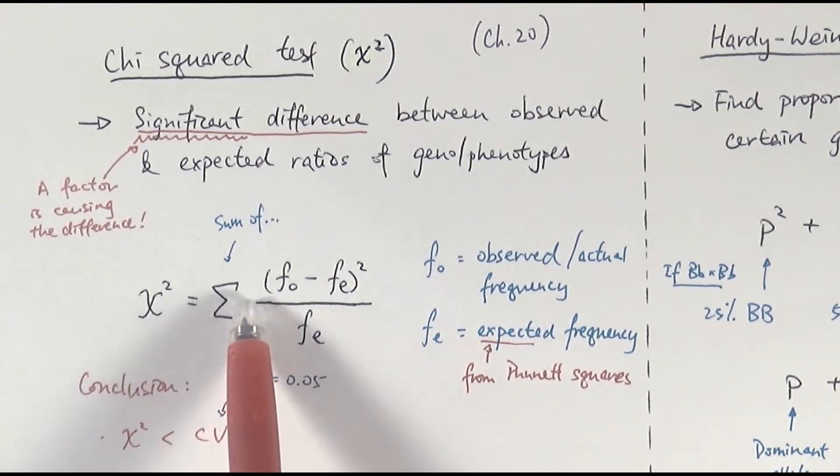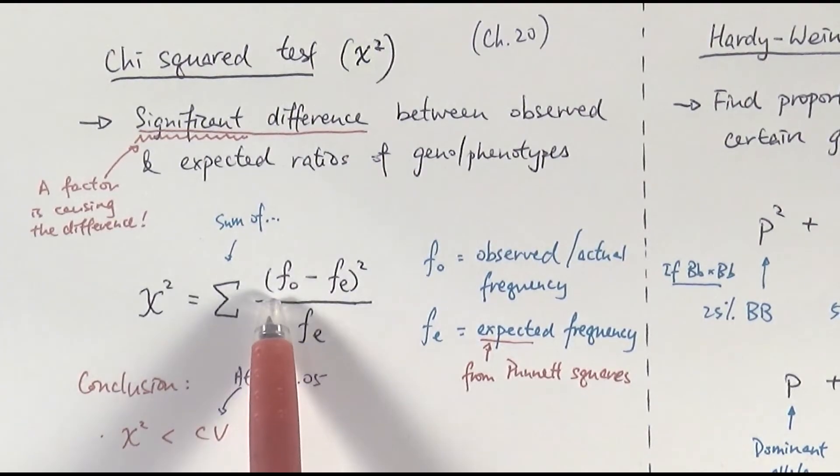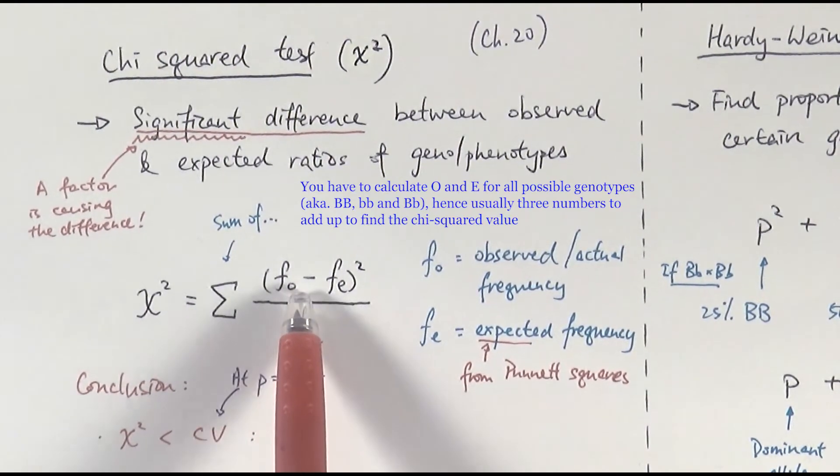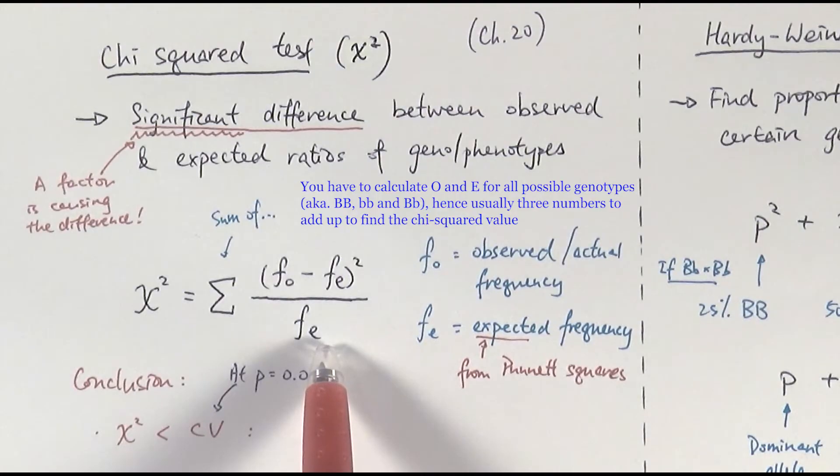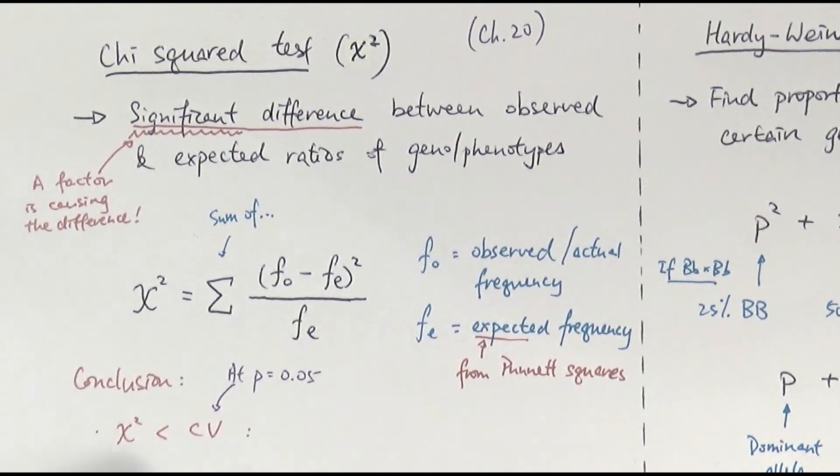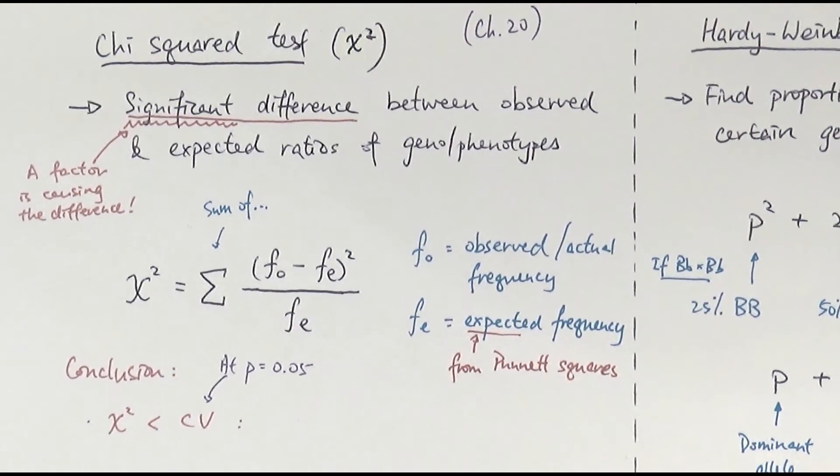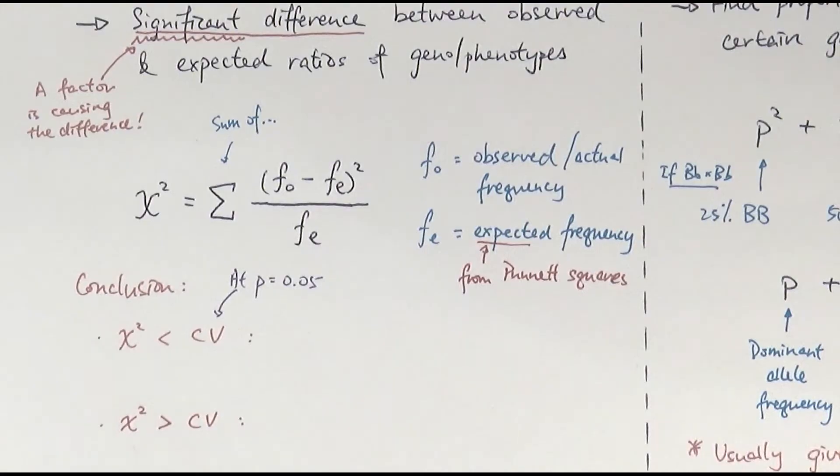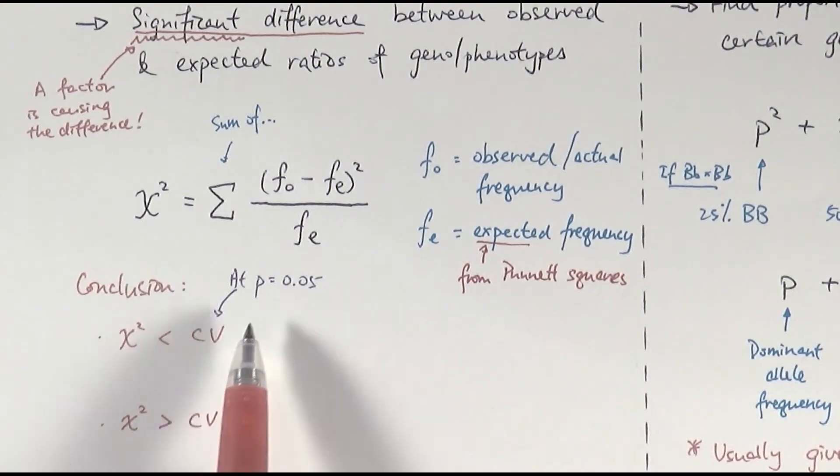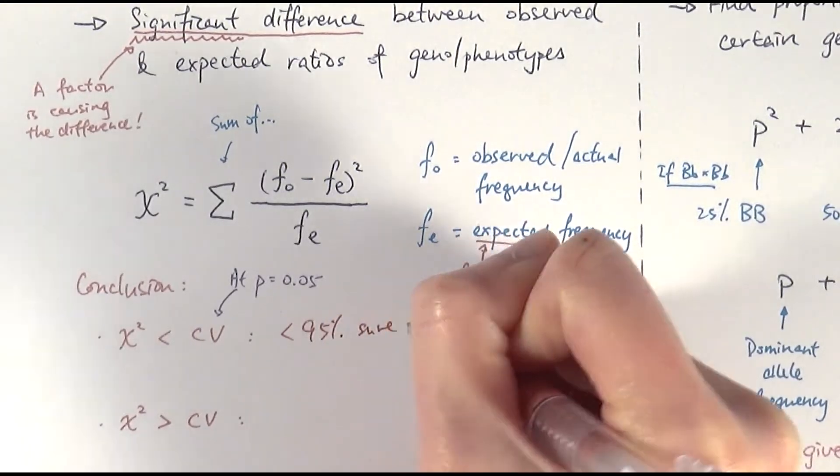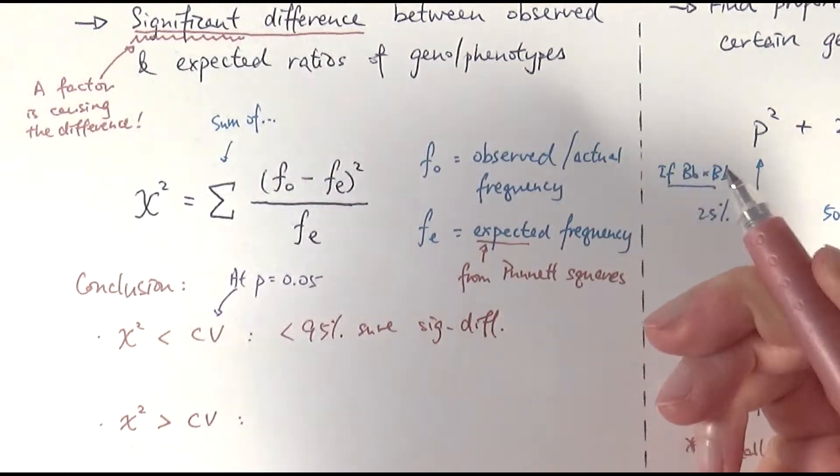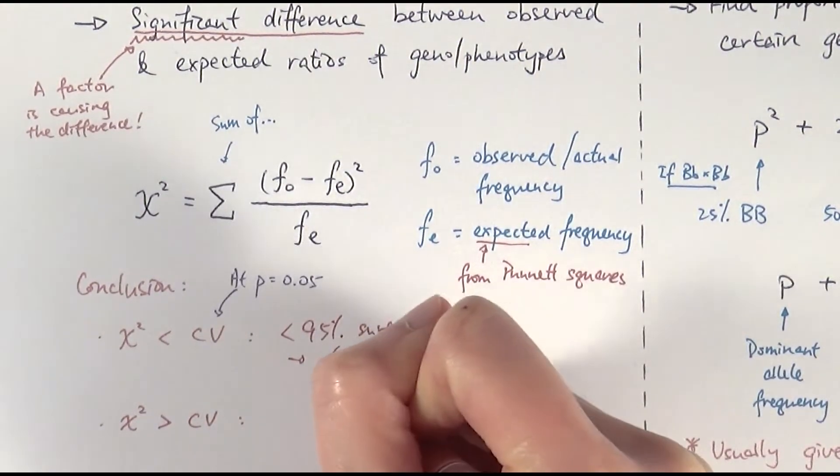So the equation is chi-squared equals, again, the sum of this whole bunch here. So f0 is the observed or the actual frequency minus my expected frequency, the whole thing squared, divided by the expected frequency here. So if you add them all up, then you will get the chi-squared value. Then the way you actually analyze that is exactly the same as how you would analyze the t-test and the Spearman's rank. We look at the critical value at p equals 0.05. And again, degrees of freedom, n minus 1. Then if it's, let's say chi-squared is smaller than critical value at p equals 0.05, then we say that we are less than 95% sure that there is a significant difference.